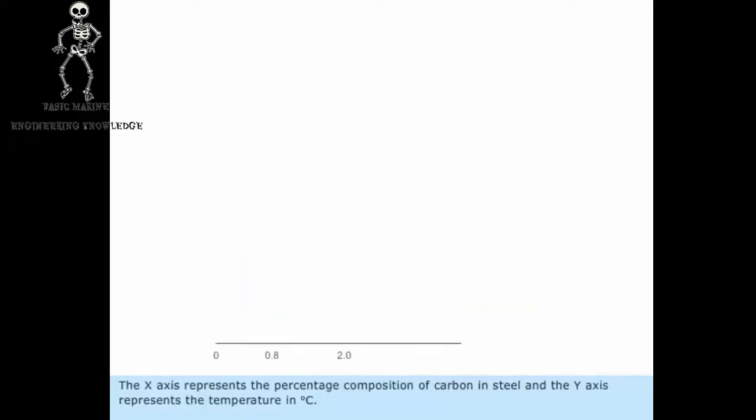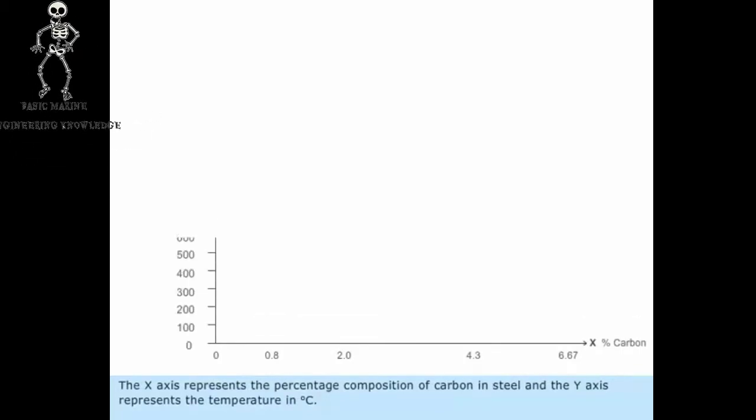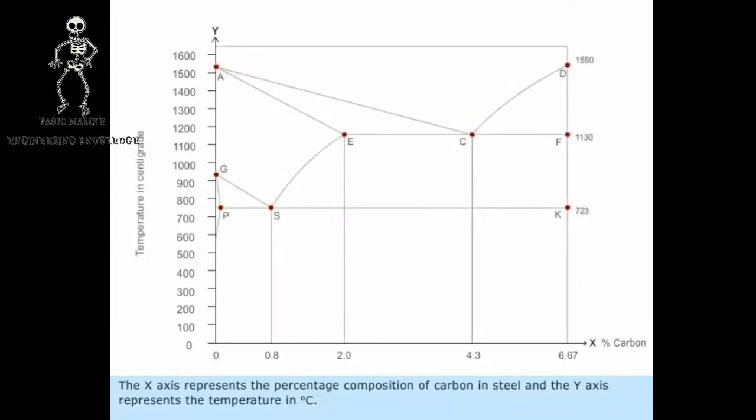The x-axis represents the percentage composition of carbon in steel, and the y-axis represents the temperature in degrees centigrade.